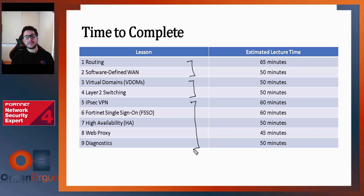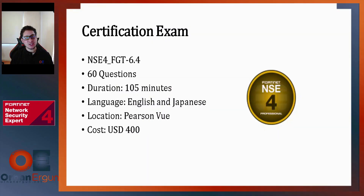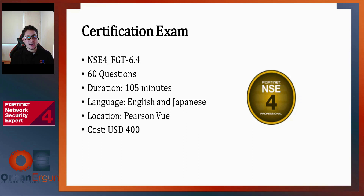Surprise content will also be added for those who subscribe to the course. About the certification exam: the exam code is NSE4-FGT-6.4. To obtain certification, you must pass the NSE4 certification exam. NSE4 certification is valid for two years from the date of completion. It has 60 questions and its duration is 105 minutes. The available languages are English and Japanese, and it costs 400 USD. You can renew your certification by taking the current NSE4 exam at a Pearson VUE Test Center, and obtaining NSE7 certification automatically renews your NSE4 certification if it has not expired.